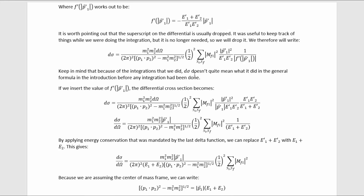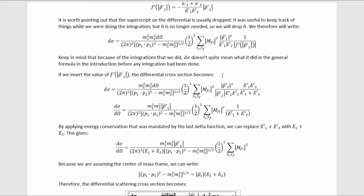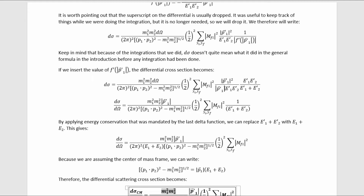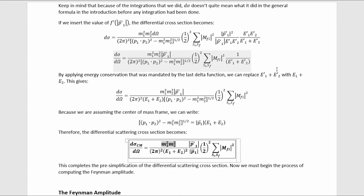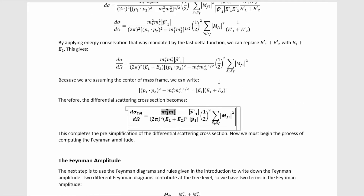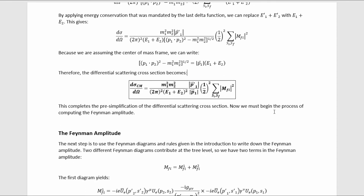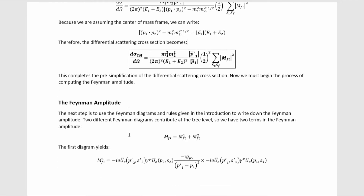Keep in mind that because of the integrations we performed, dσ doesn't mean what it did in the general formula before integration. Inserting the value of F prime, we get a result with nice cancellation. Then we can use energy conservation to replace one quantity with another, writing the differential scattering cross-section in a cleaner form. Here we get to the second application of the center of mass frame assumption — rewriting a particular quantity — which ultimately gives us the differential scattering cross-section simplified as much as possible before plugging in the Feynman amplitude.